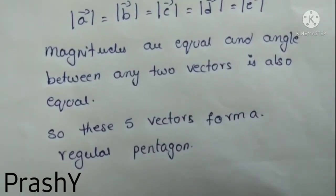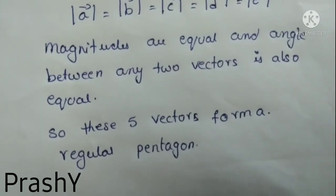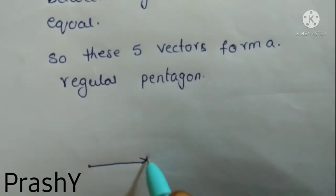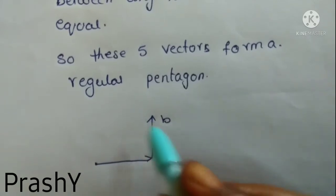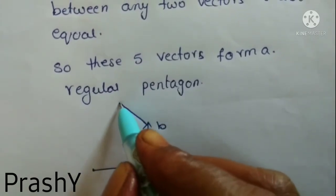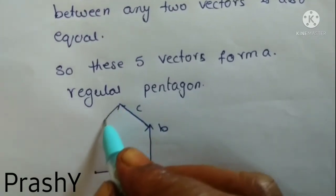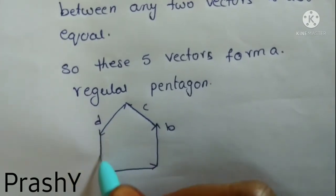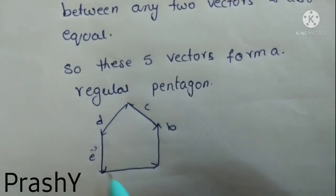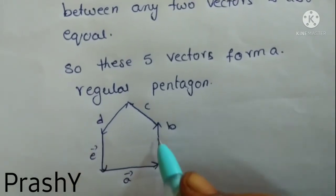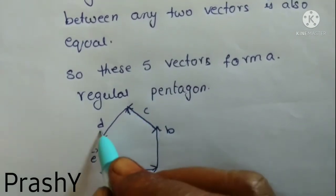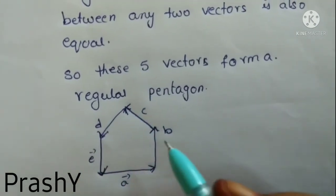Let me draw this. This is A bar, B bar, C bar, D bar, E bar. So if you observe, all these vectors are moving in cyclic order.